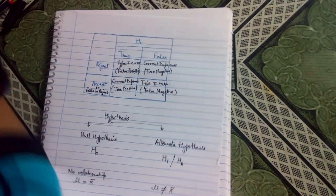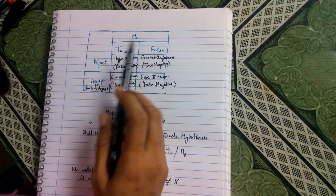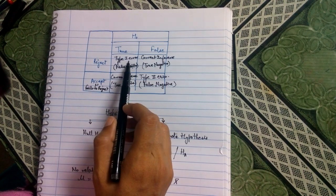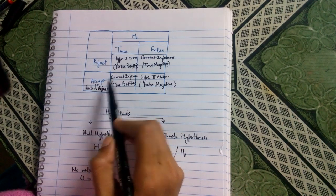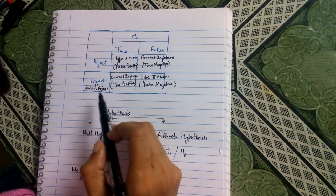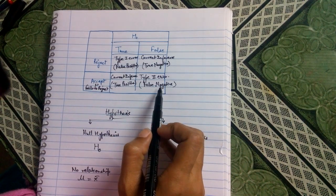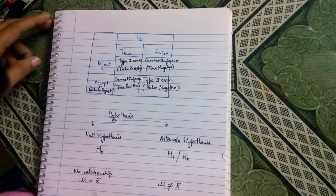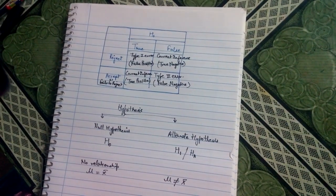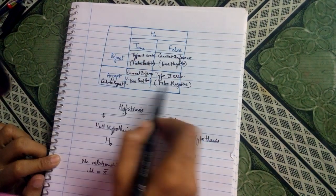So now we can say that if we reject the correct or true hypothesis, that is Type 1 error. If we are accepting the false hypothesis, or we fail to reject the false hypothesis, this is known as Type 2 error. I hope this small box helps you solve many questions that have been asked in the NET exam.